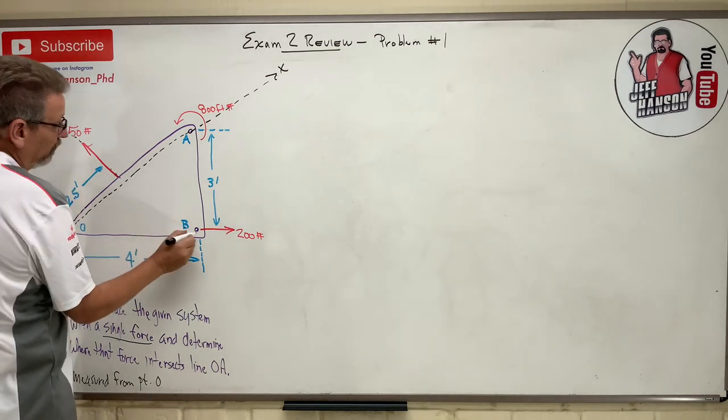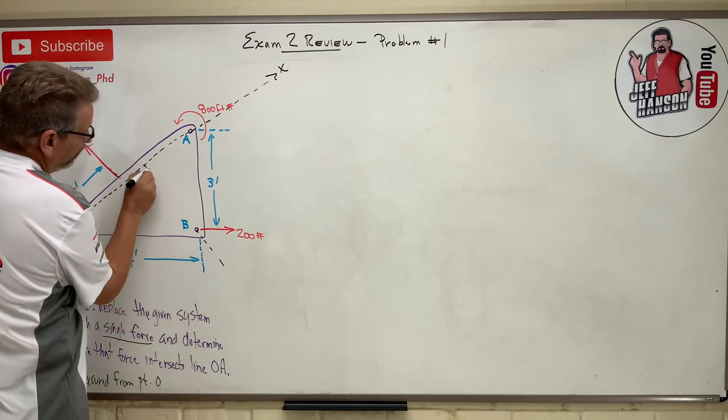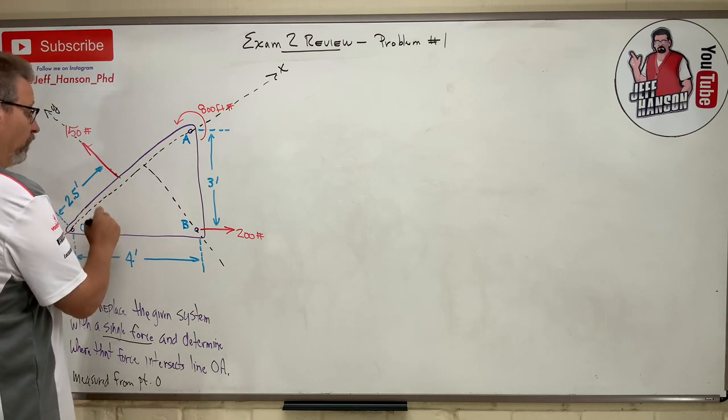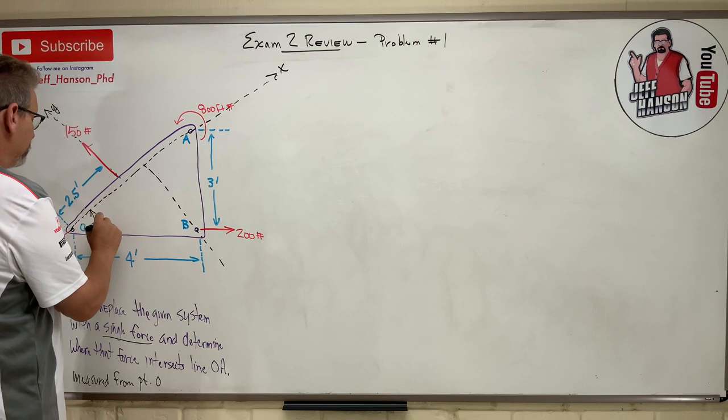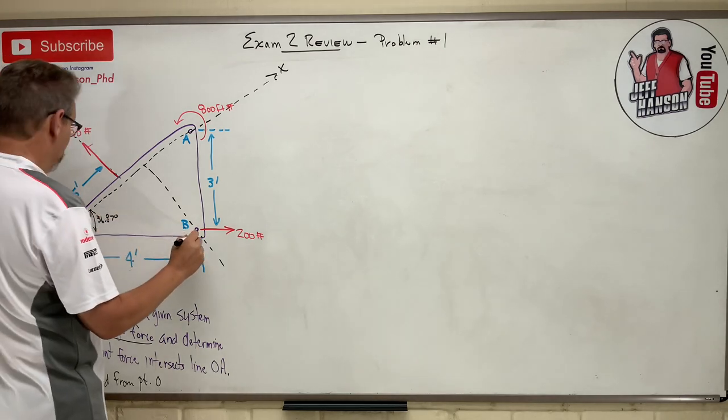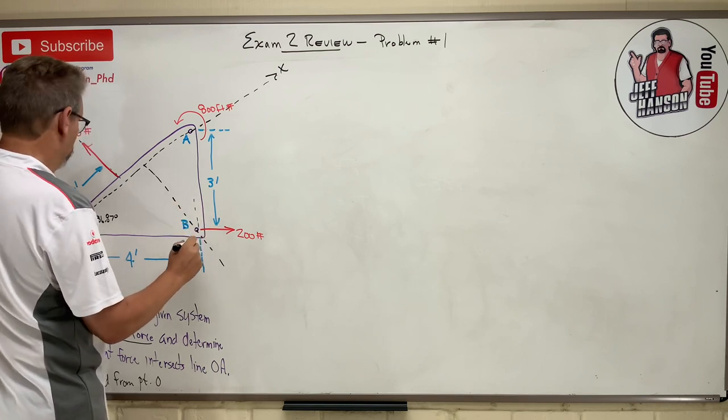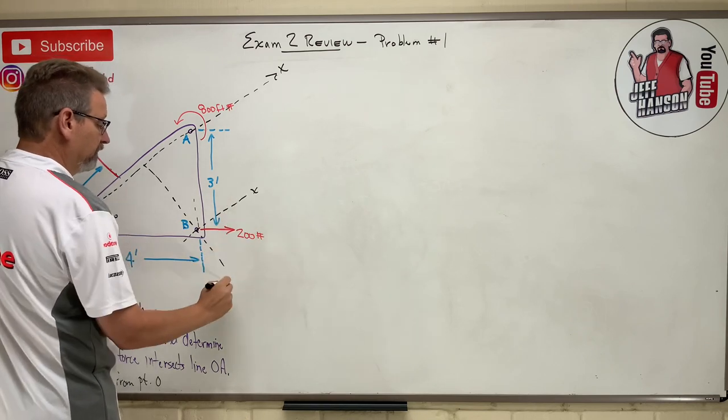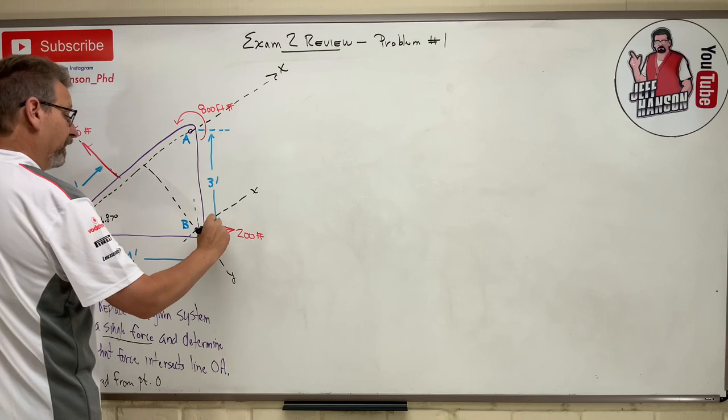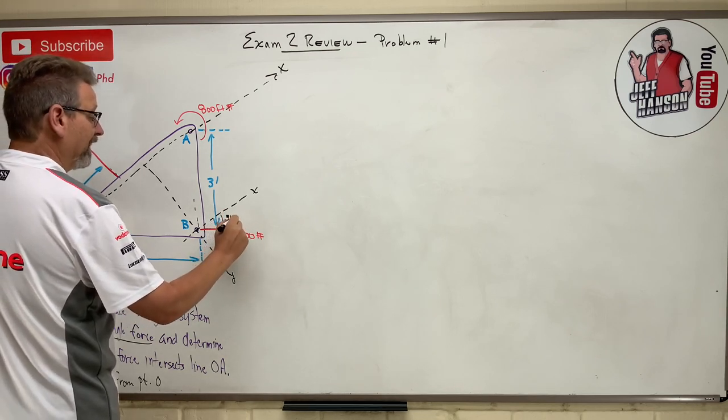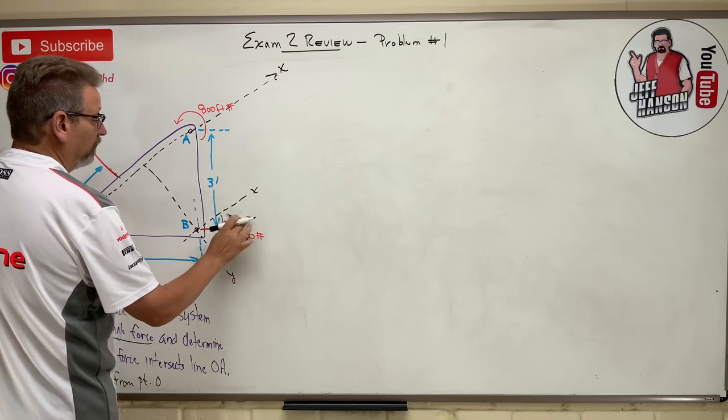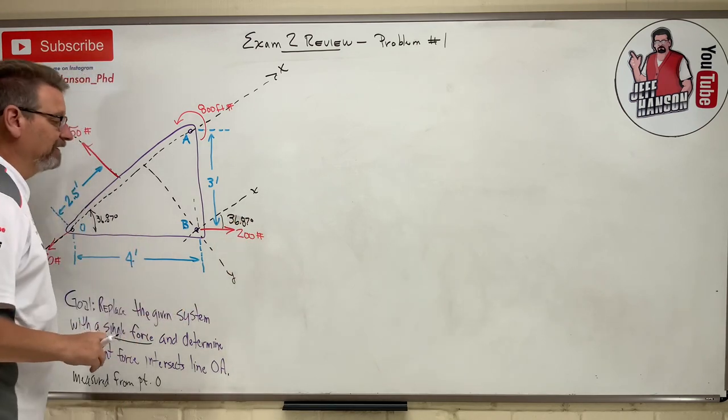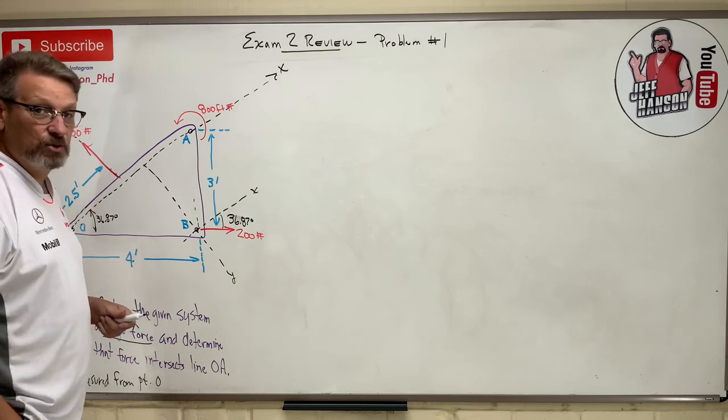Let's say I had this line coming down here. This angle right here is 36.87 degrees. This is my new x, this is my new y. This little angle right there would also be 36.87 degrees. I need that because I want to break that 200 into two components. I have a component like this and one like that.